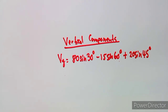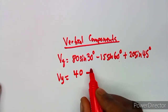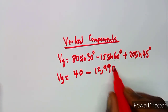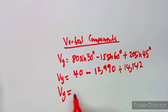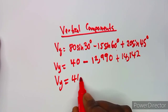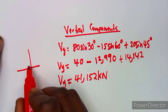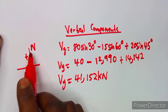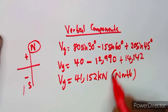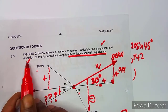Let's simplify the vertical component: that gives us 40, minus 12.990 from the calculator, plus 14.142. So combining everything, we obtain a vertical component of 41.152 kilonewtons. The vertical being positive means it's going to the North — that will be the direction. Now we need to find the resultant and also the direction.